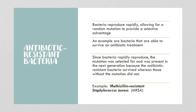One type of mutation is antibiotic-resistant bacteria. Bacteria can reproduce so quickly, it allows for random mutations to provide selective advantages. Bacteria that are able to survive antibiotic treatment are selected for, and that mutation is present in the next generation because the antibiotic-resistant bacteria survived where those without the mutation didn't. An example is methicillin-resistant Staphylococcus aureus, or MRSA — a bacteria prevalent in hospitals that is quite a problem to treat when people acquire this infection.